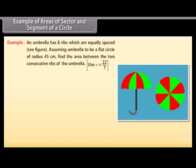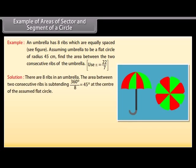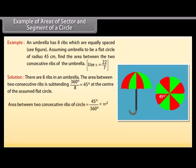Example: An umbrella has 8 equally spaced ribs. Assuming the umbrella to be a flat circle of radius 45 cm, find the area between two consecutive ribs. Using π = 22/7: The angle between two consecutive ribs is 360°/8 equals 45°. Area between two consecutive ribs equals 45°/360° × πR² equals 22275/28 cm².